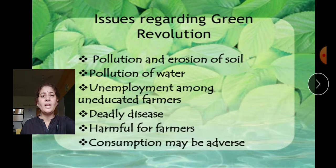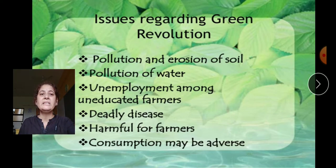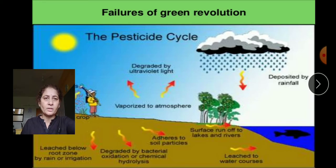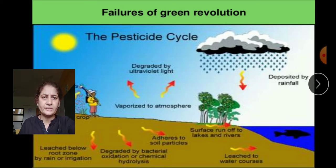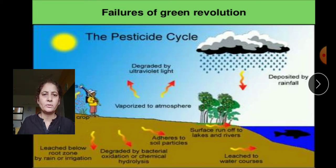Some deadly diseases have appeared because of the chemicals — harmful for farmers who spend most of their time with these substances. Economically and health-wise, both have issues. The food we eat is urea-related and chemical-related, which is not good for us. Pesticides go into the crops, run off into lakes with rainfall, and spread into our food.